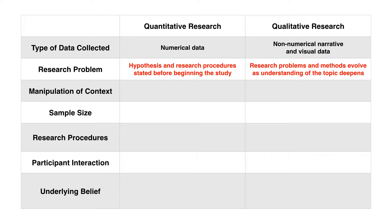In terms of the research problem, quantitative research deals with hypotheses and research procedures stated before beginning the study. In qualitative research, problems and methods evolve as understanding of the topic deepens. With quantitative research, there is a manipulation of context, whereas in qualitative research you are simply trying to describe the context.